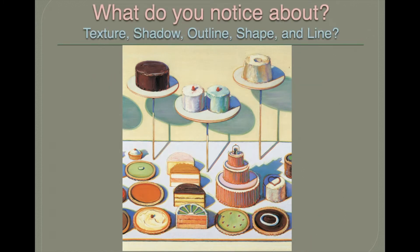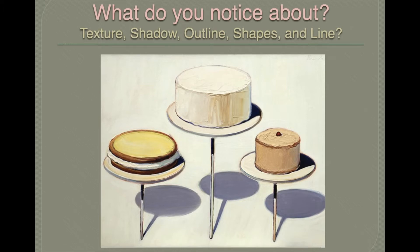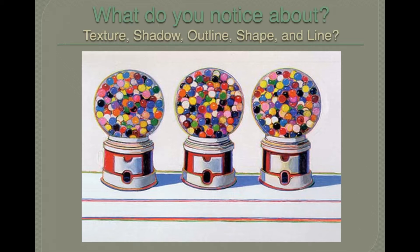Look at all these yummy desserts. Think about it: do you see a shadow? Outlines? What kind of shapes do you see? What kind of lines do you see? And here are three gumball machines with very strong shadows being cast, and they repeat themselves. There are also horizontal lines.